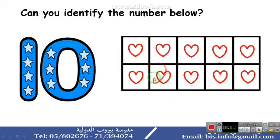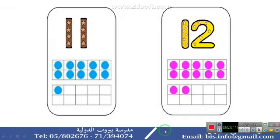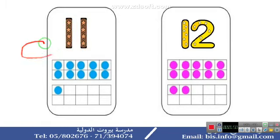We can say that the frame is full. What comes after 10? 10... 11! Very good — this is number 11. Say it: 11. Now let's count the circles inside the 10-frame. Help me to count: 1, 2, 3, 4...